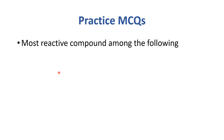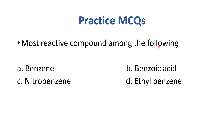There is a practice MCQ: which is the most reactive compound among the following — benzene, benzoic acid, nitrobenzene, or ethylbenzene? The correct answer is ethylbenzene. Since ethyl is an alkyl group, it is an ortho/para director that enhances benzene's reactivity, making ethylbenzene the most reactive among the options.